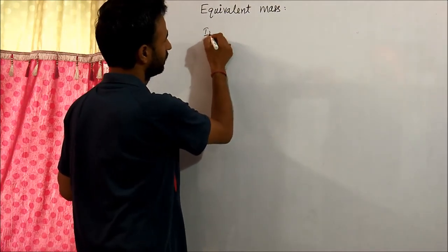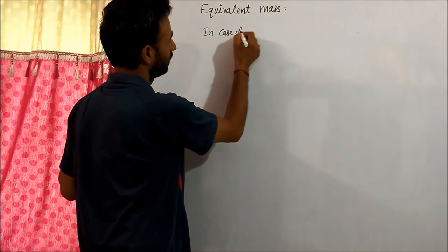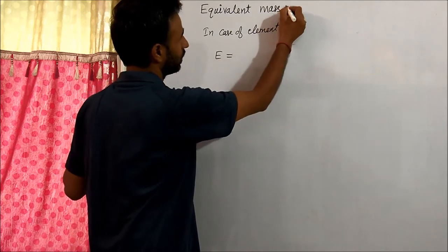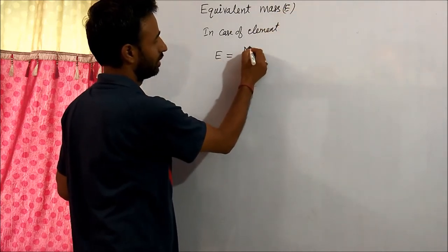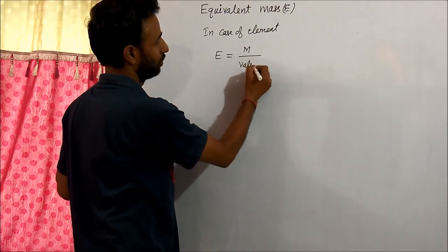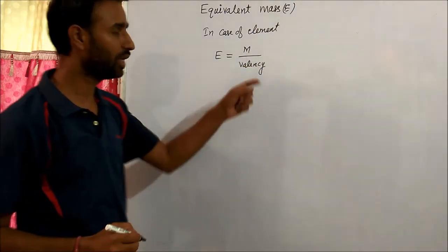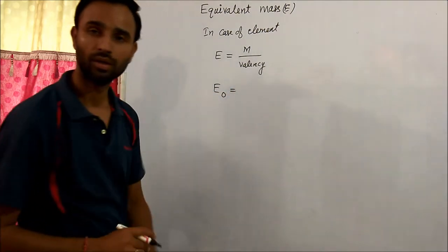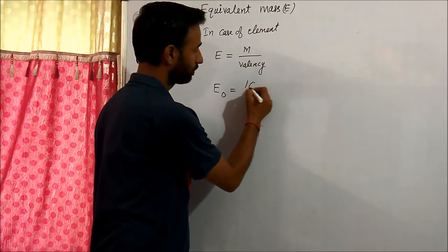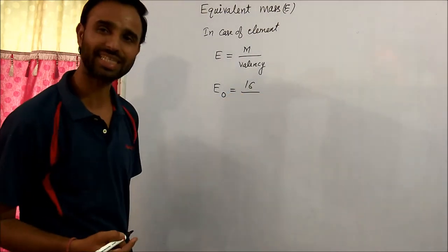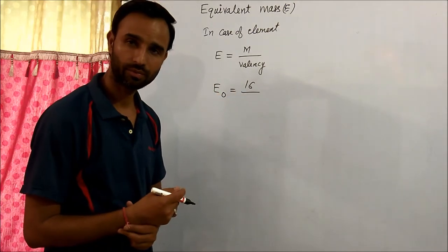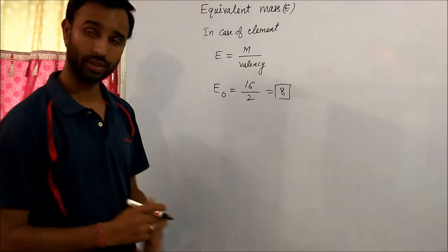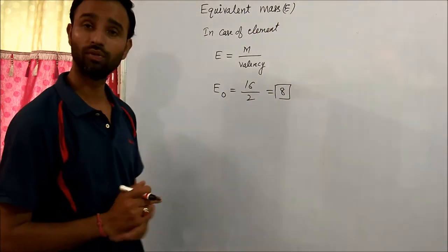In case of an element, equivalent mass is equal to molar mass divided by valency. For example, equivalent mass of oxygen: the atomic weight of oxygen, which is its molar mass, is 16. The valency of oxygen is 2. So, 16 divided by 2 gives 8 as the equivalent mass of oxygen.